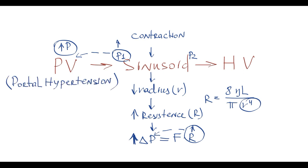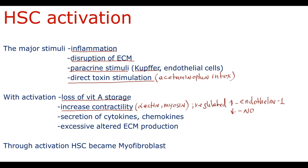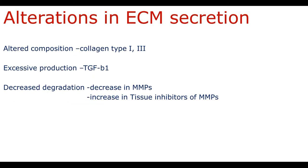So that's how increase in hepatic stellate cell contractility can contribute to portal hypertension development in cirrhosis. Also, with activation, hepatic stellate cells begin to produce cytokines and chemokines to regulate inflammatory processes. The most important feature is that hepatic stellate cells begin to excessively secrete altered extracellular matrix, and through activation hepatic stellate cells become myofibroblasts. There are alterations in extracellular matrix composition: while glycoproteins and proteoglycans remain relatively constant, collagen is totally different.